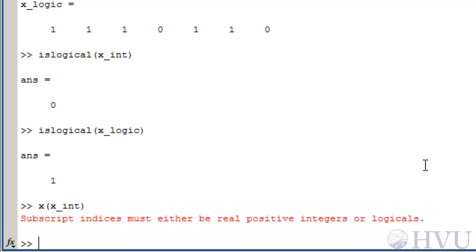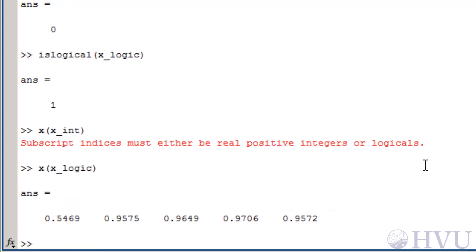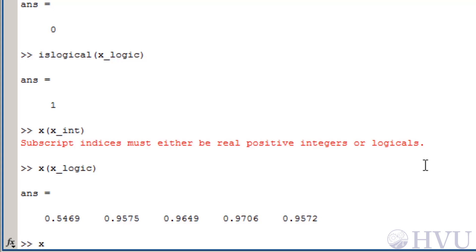However, x underscore LOGIC works perfectly well as indices to the x array. If I type x of x underscore LOGIC, I get back the elements of the x array corresponding to the indices that have values of LOGICAL 1 in the x underscore LOGIC array. This really just corresponds to the values of the original x array which rounded up to 1, which are just the values that are greater than 0.5.